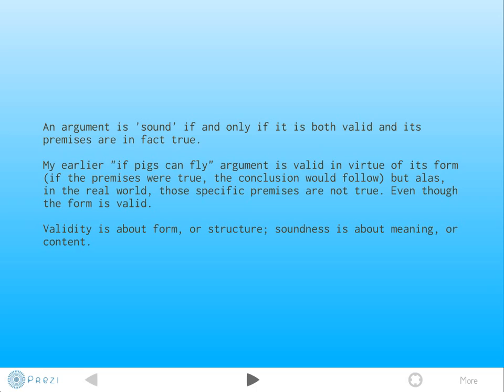Validity is not to be confused with soundness. An argument is sound if and only if it's both valid and its premises are in fact true. My earlier 'if pigs can fly' argument is valid in virtue of its form. If the premises were true, the conclusion would follow. If it was true that flying pigs would make me rich, and if I had flying pigs, then it follows that I'm rich. None of these things, unfortunately, in the real world are true. But the form is valid. So it's a valid argument that is unsound. Validity is about the form or structure of arguments. Soundness is about the meaning or content of arguments. It's important to keep these two separate.